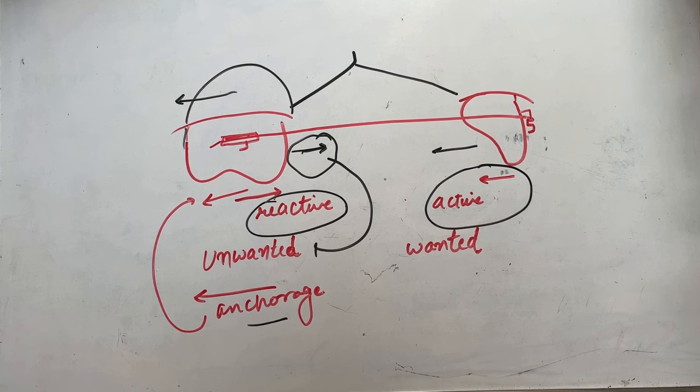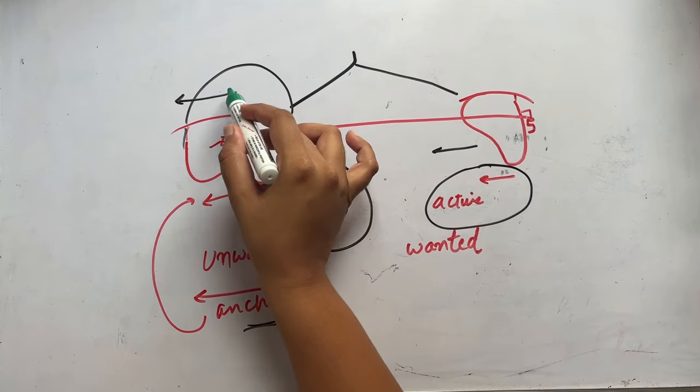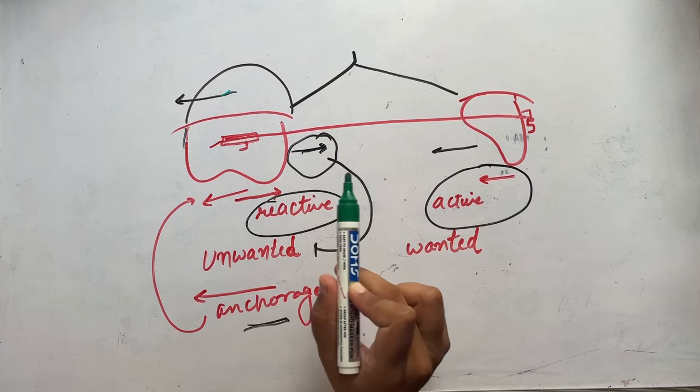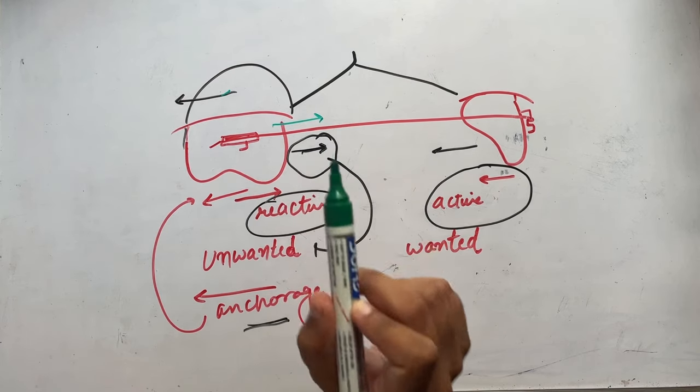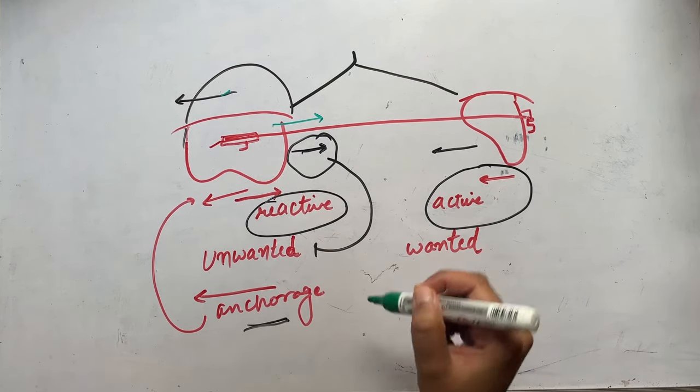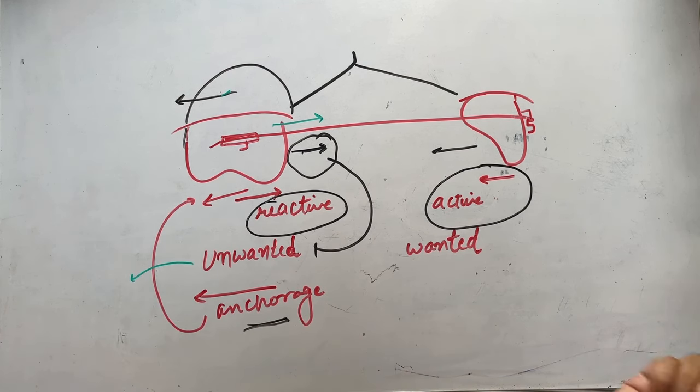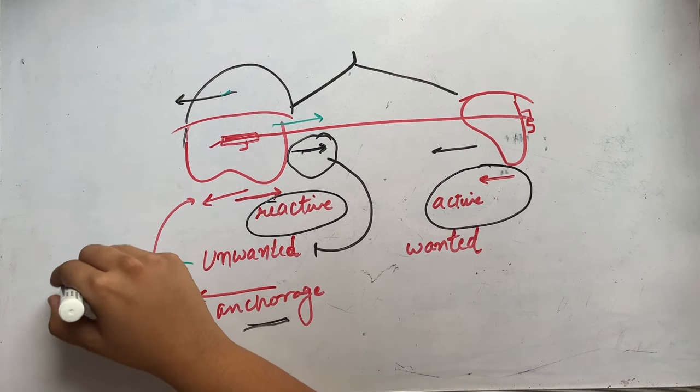Now in the same diagram we'll talk about anchorage loss. These are the methods to prevent molar to move mesially, but in cases the molar will still move. So this unwanted movement that the molar moves mesially will be my anchorage loss.